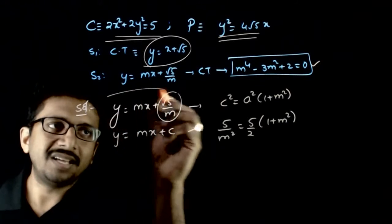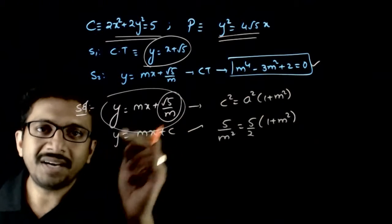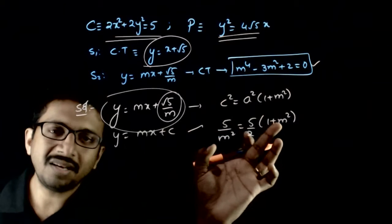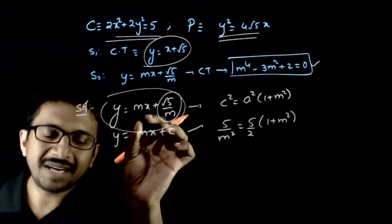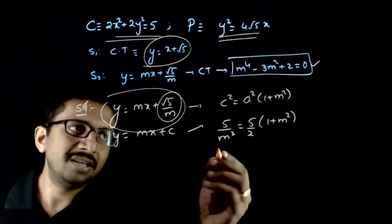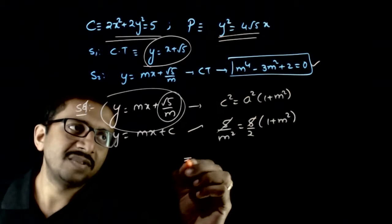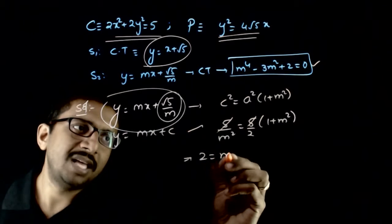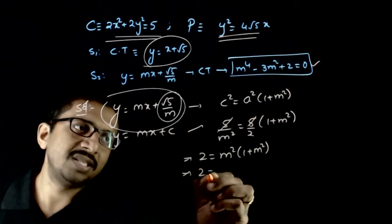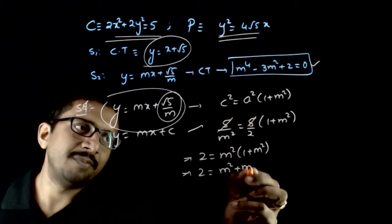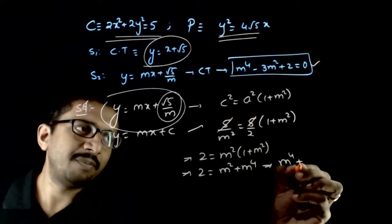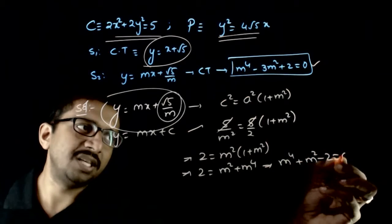If the tangent is of this form, it is already a tangent to the parabola. Now if m satisfies this equation, it will also be a tangent to the circle, making it a common tangent. The 5s cancel, giving 2 = m²(1 + m²), which implies 2 = m² + m⁴, so m⁴ + m² − 2 = 0.